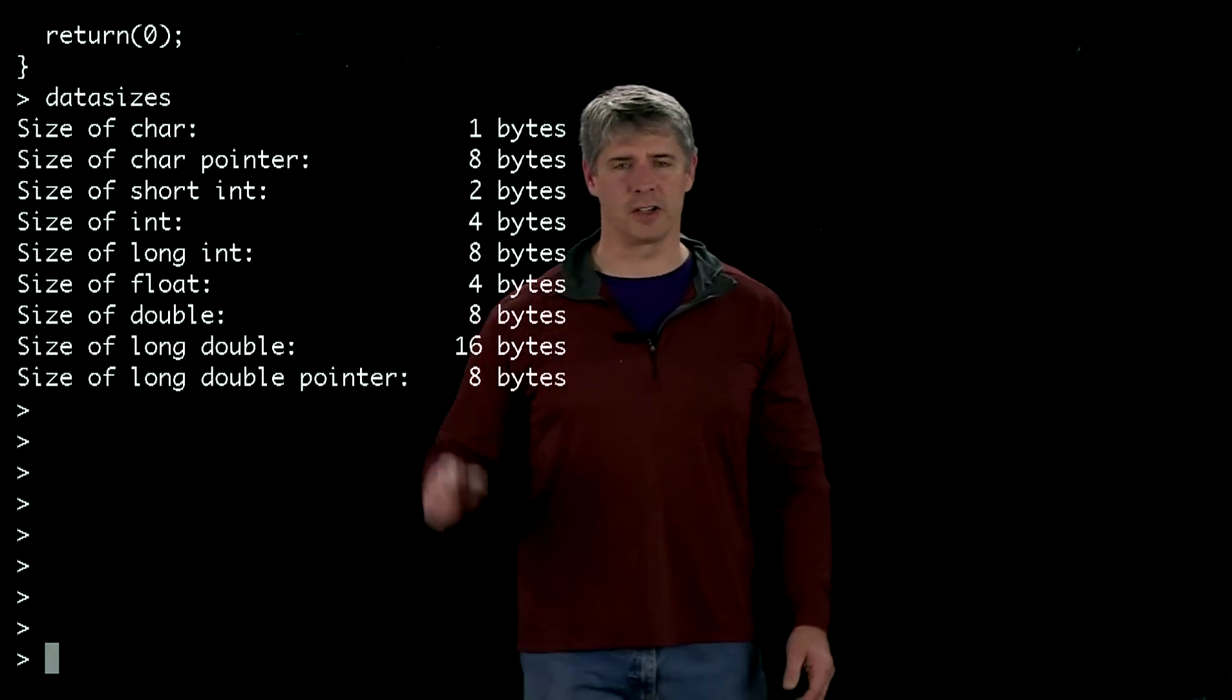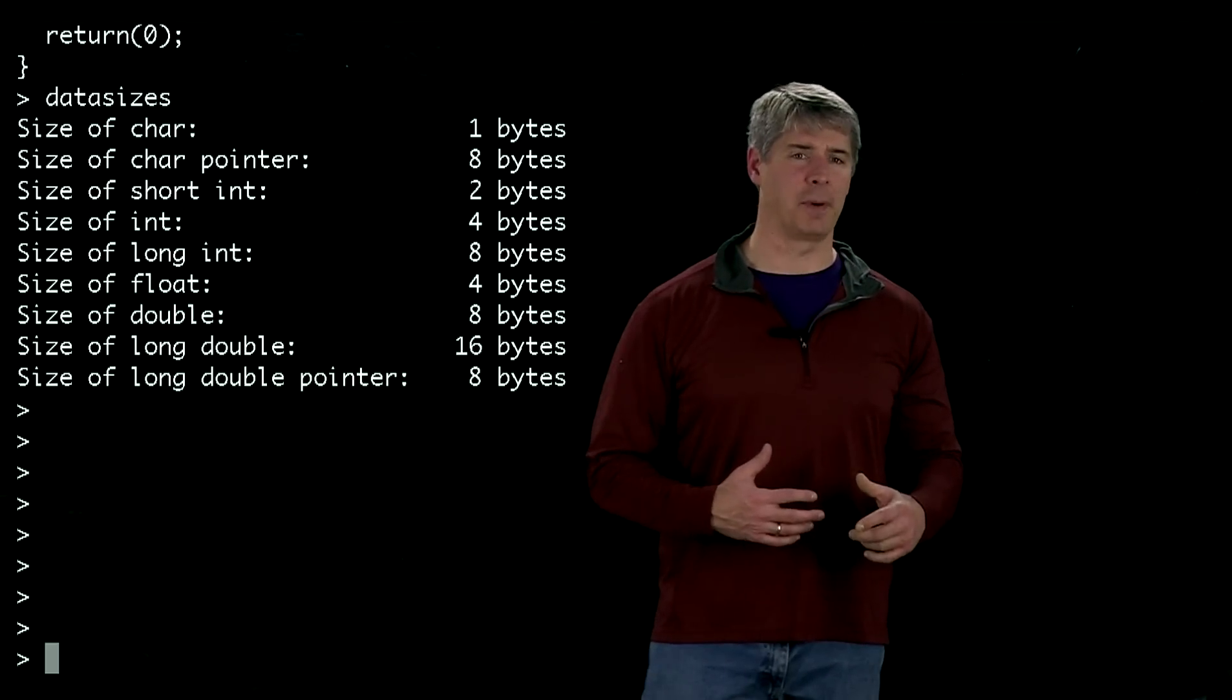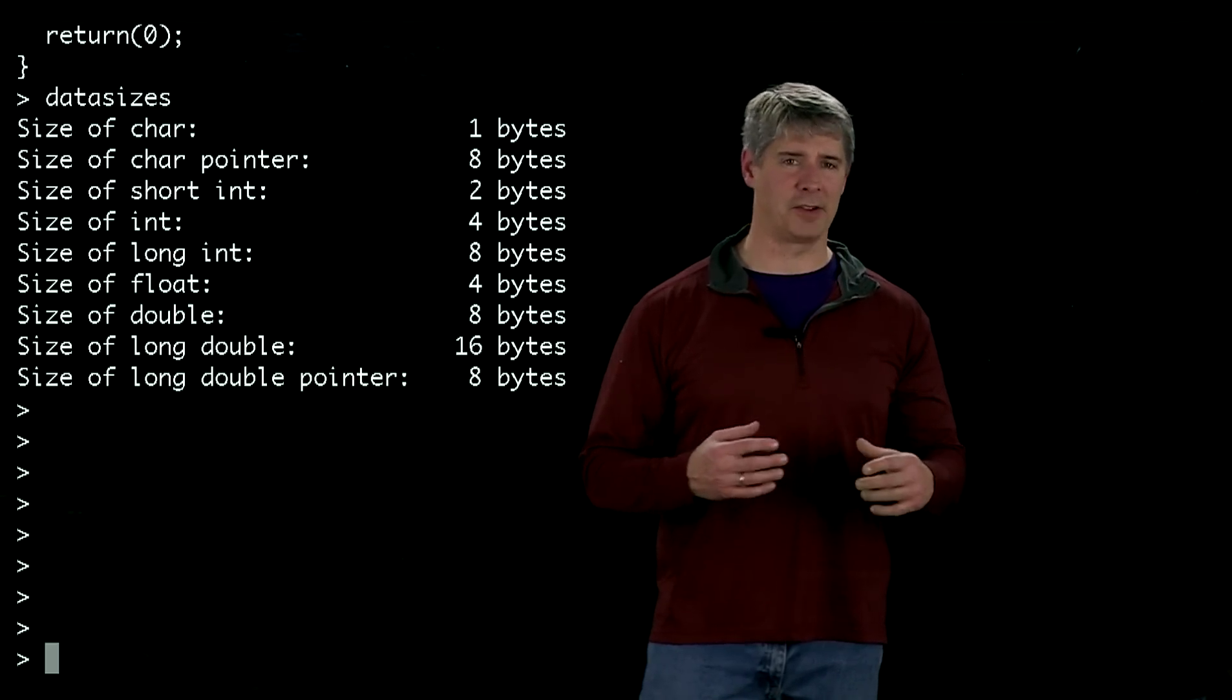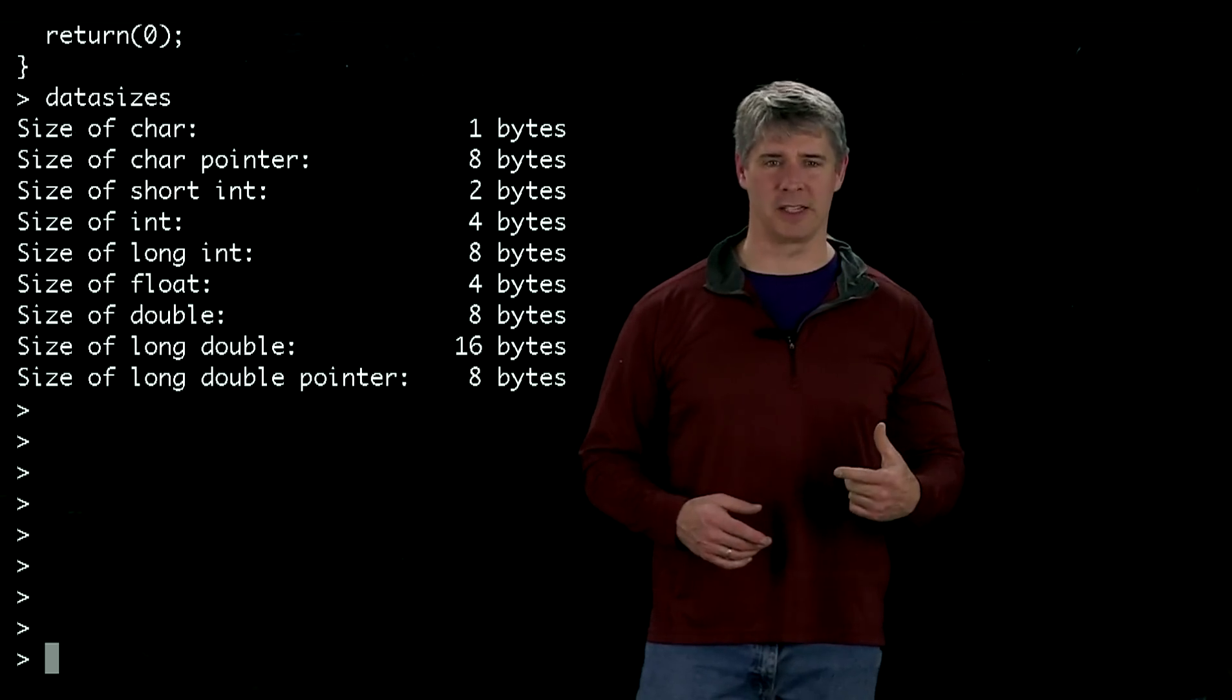And here's the output. We can see that the size of char is one byte, as we'd expect. The size of char pointer is eight bytes. Now, what that means is that an address, at least on my laptop, has eight bytes in its representation.